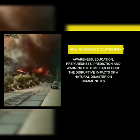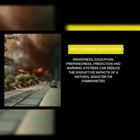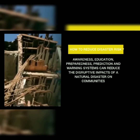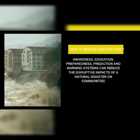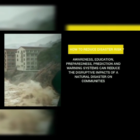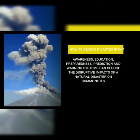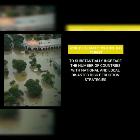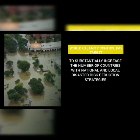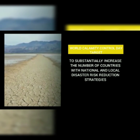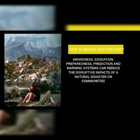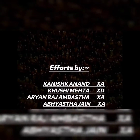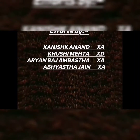Risk awareness, education, preparedness, prediction, and warning systems can reduce the disruptive impacts of a natural disaster on communities. Mitigation methods such as adoption of zoning, land use practices, and building codes are needed to prevent or reduce actual damage from hazards. Avoiding development in landslide and flood-prone areas through planning and zoning may save money in construction, reduce loss of life, and prevent damage to property and natural resources.